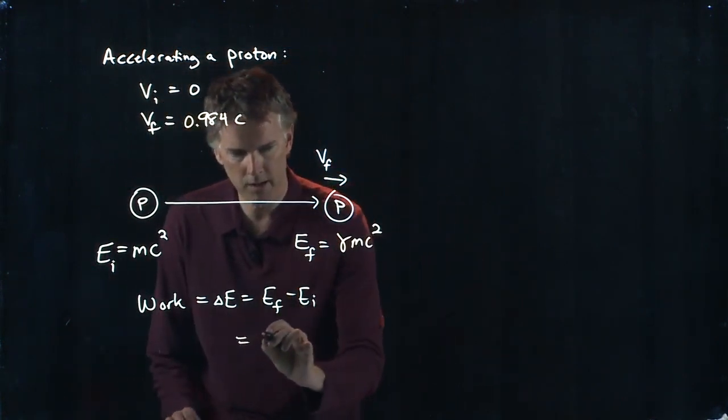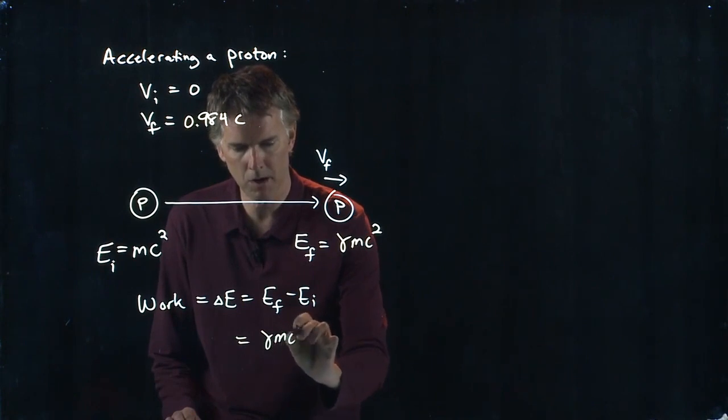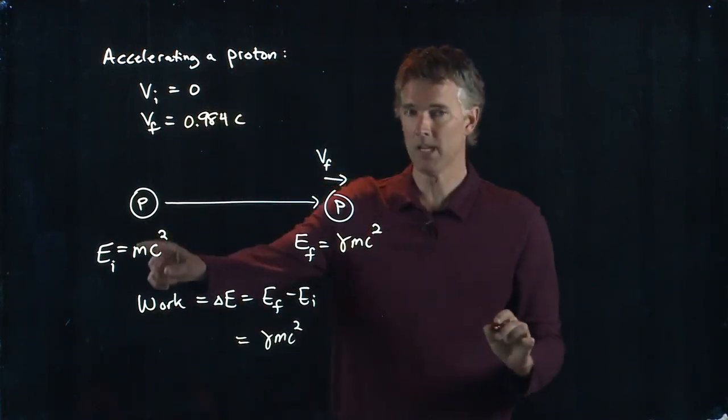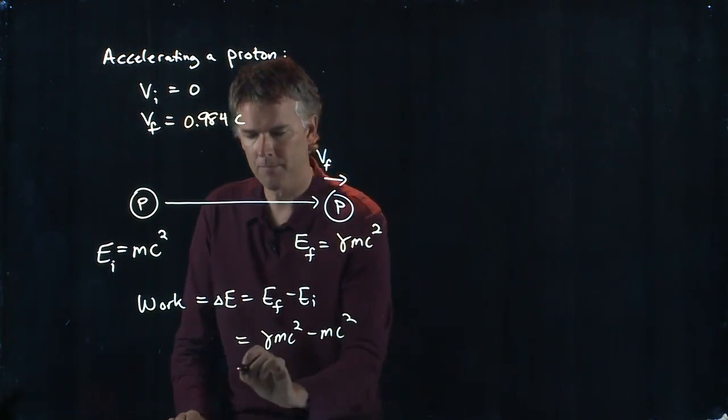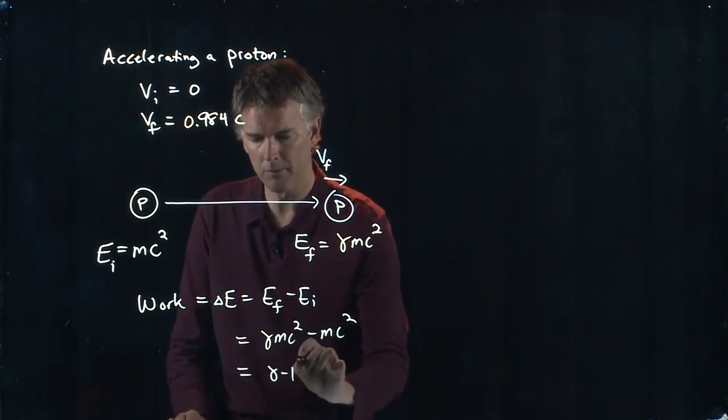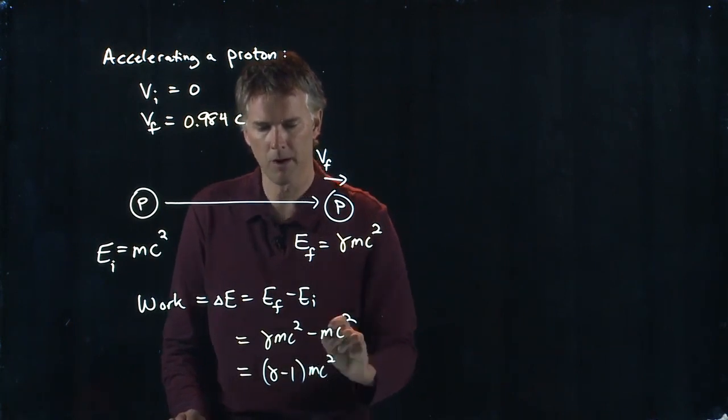We know what the final energy is, it's gamma MC squared. We know what the initial was, it's just MC squared. And so we get gamma minus 1 times MC squared.